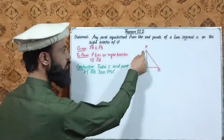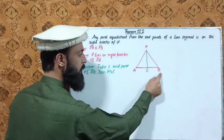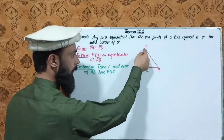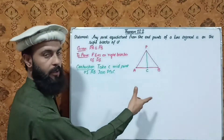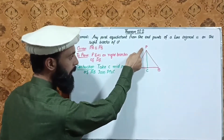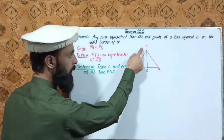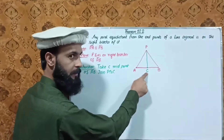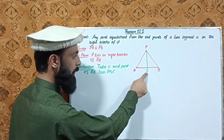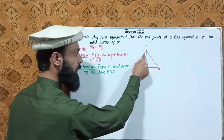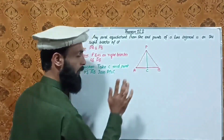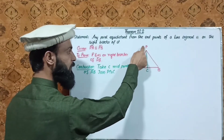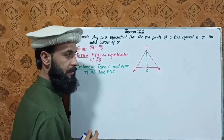Proof: We want to show that P lies on the right bisector of AB. The right bisector is perpendicular to the midpoint. We need to prove that PC is perpendicular to AB.